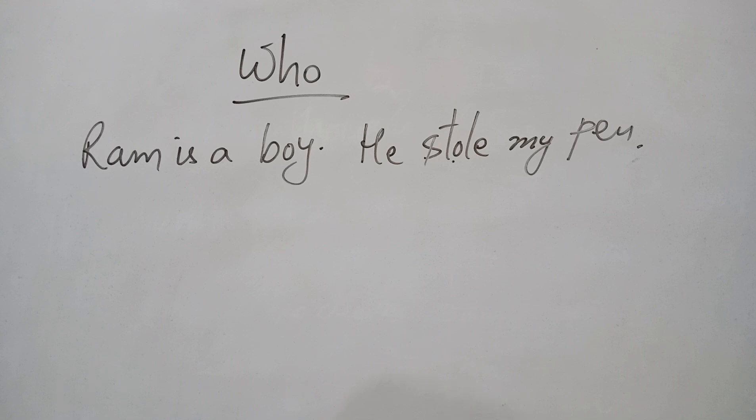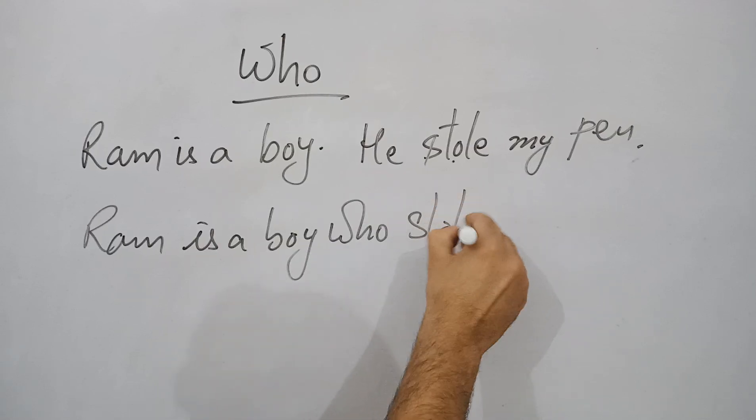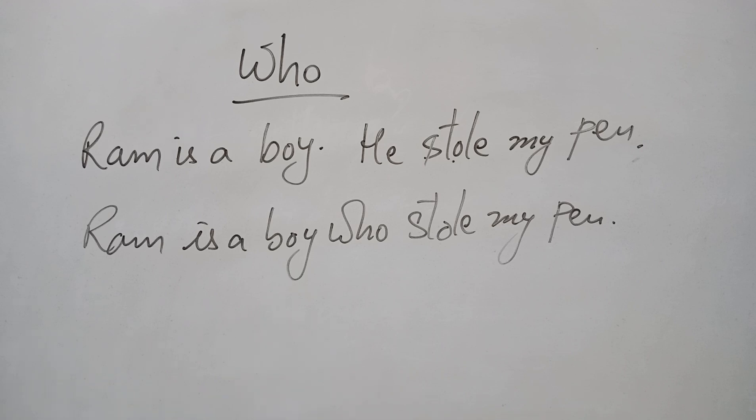Now we are going to combine two simple sentences with question word 'who'. Ram is a boy, he stole my pen. Now you can write the sentence like this: Ram is a boy who stole my pen. So many sentences can be made like: Sachin is a player who played for India. Ravi is a boy who stood first in my class.